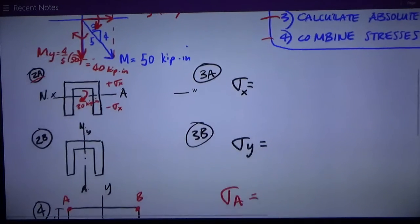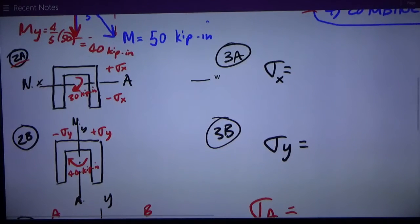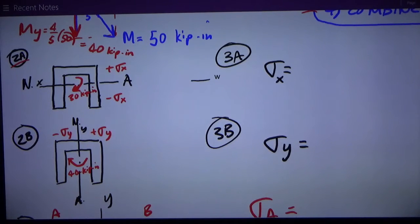Let's look at case 2b, which is bending about the y-axis. That's a moment in this direction from the right towards the left, which produces negative sigma y, or compression, on the left side, positive sigma y on the right side. The moment is 40 kip-inches. So now I've determined where I have, on which side of each neutral axis, compression and tension.